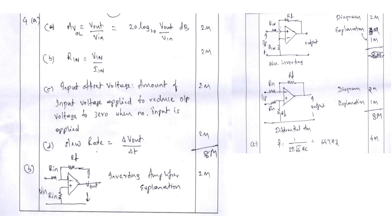For the ladder network problem, the R value and C value are given. Substitute them into the formula: frequency equals 1 divided by 2π√6·RC. Calculate and write the resulting frequency in Hertz. This problem carries four marks.